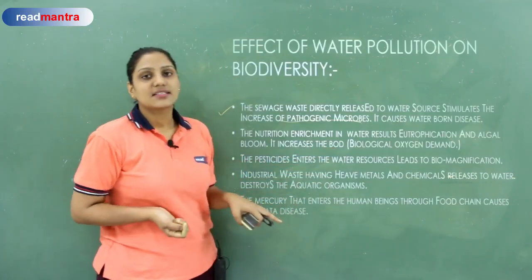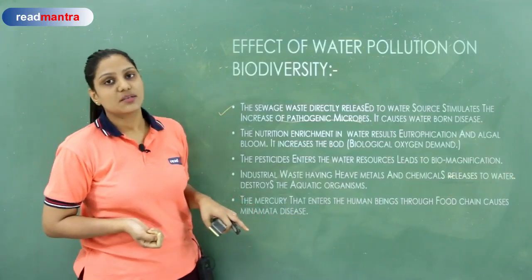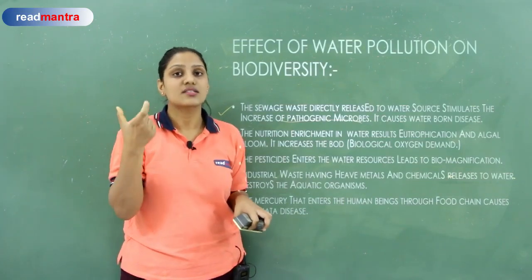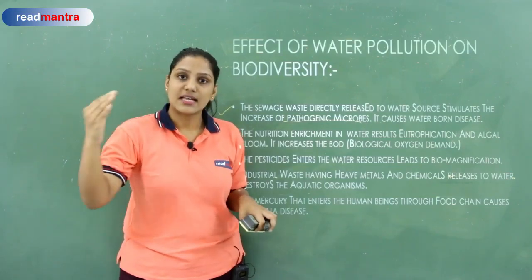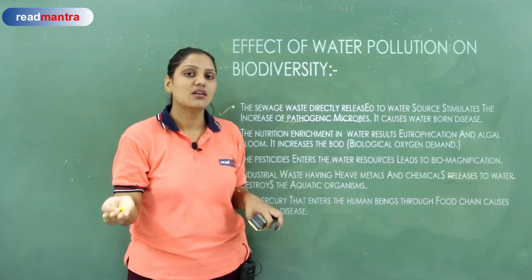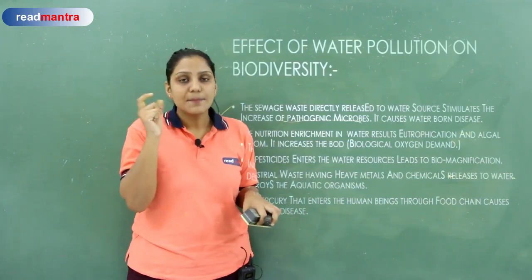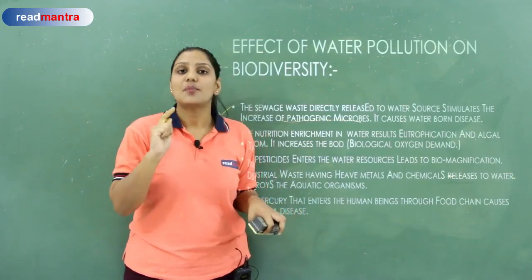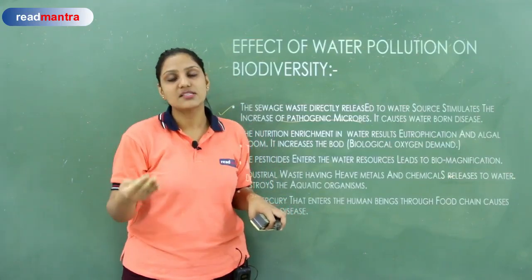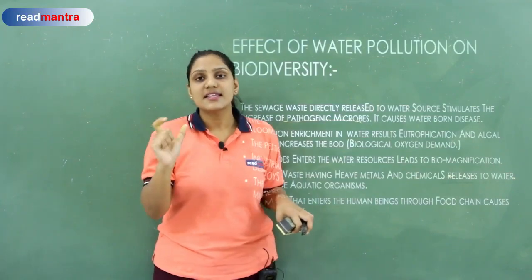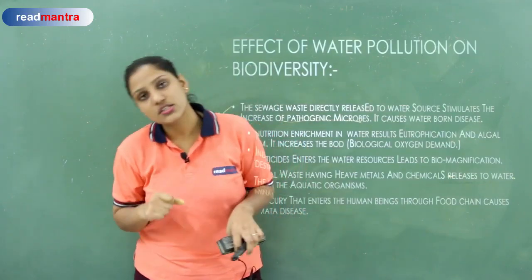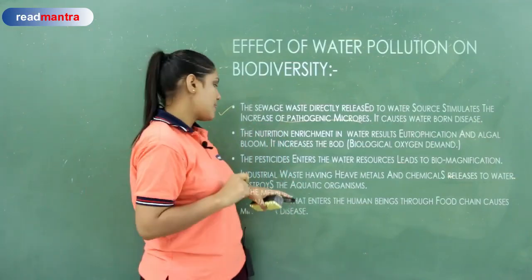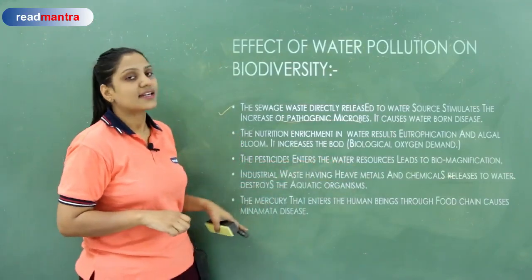Algal bloom increases BOD — biochemical oxygen demand. When microorganisms degrade organic waste in water, they use oxygen, so oxygen levels decrease. The more polluted the water, the higher the BOD. Pesticides entering water resources cause biomagnification. Biomagnification is a very dangerous phenomenon — pesticides and insecticides are not metabolically excreted from the body; they are retained.